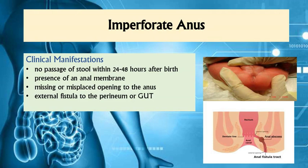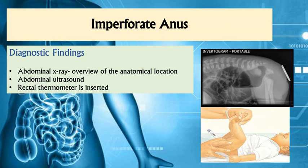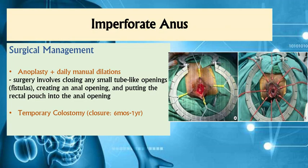Diagnostic exams include radiographic procedures such as abdominal x-ray and ultrasound to visualize the anatomical features of the anus. A simple assessment by checking the newborn's temperature via the rectal route can already diagnose an imperforate anus. For surgical management, an anoplasty procedure may be done to create an actual anal opening by placing the rectal pouch into the anus, performed at an earlier stage. A temporary colostomy may also be done, creating an opening in the large intestine for passage of stool, with closure usually performed between 6 months and 1 year of age.